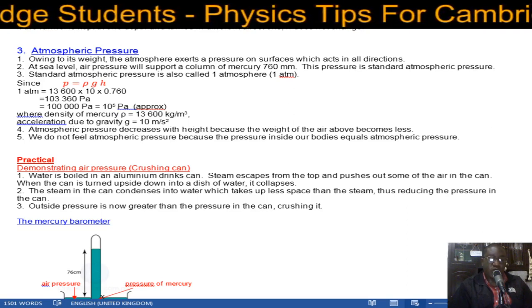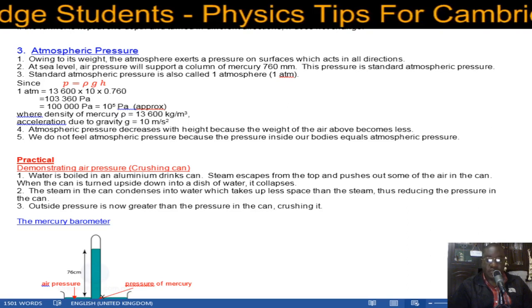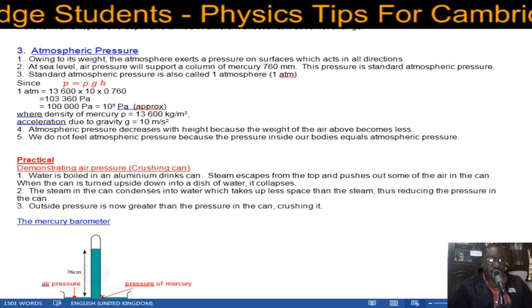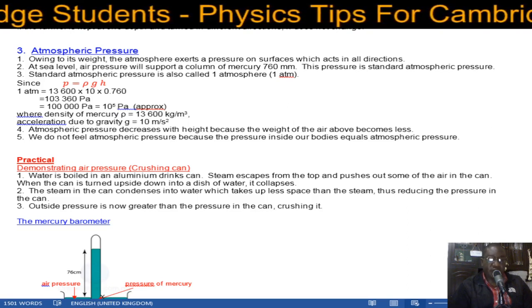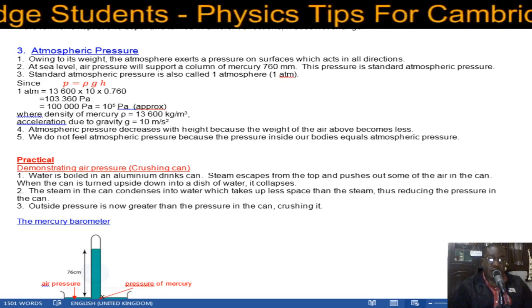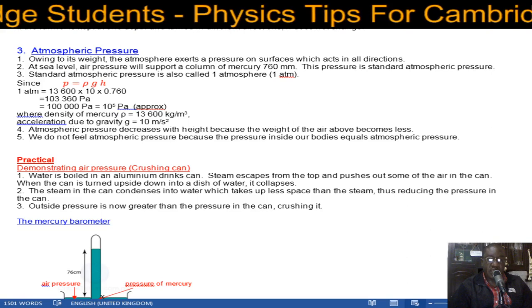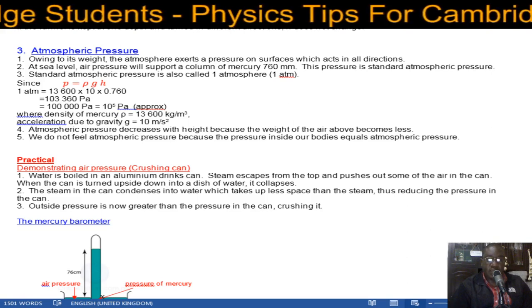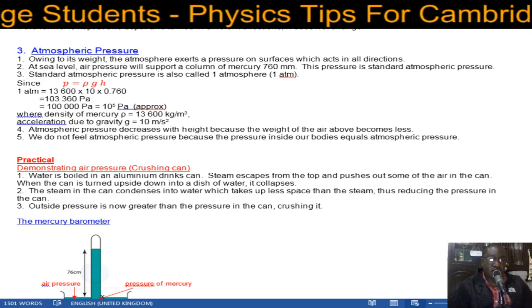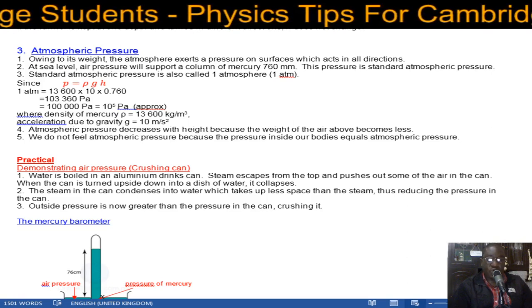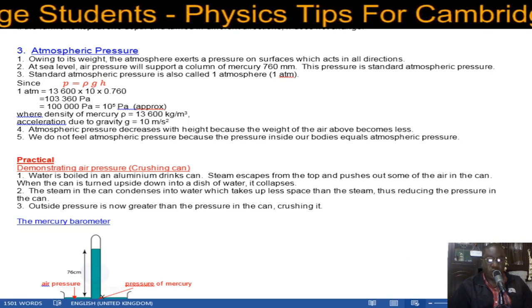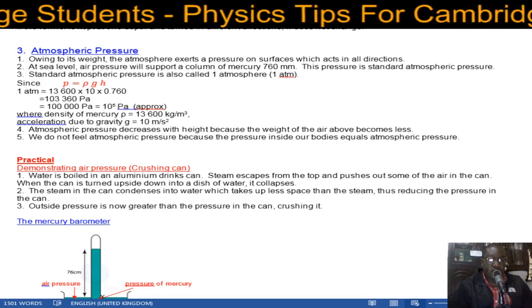Now atmospheric pressure. The atmosphere exerts a pressure on surfaces which act in all directions because the atmosphere has weight. At sea level, air pressure will support a column of mercury of 760 millimeters. This pressure is standard atmospheric pressure, also called one atmosphere or one atm.